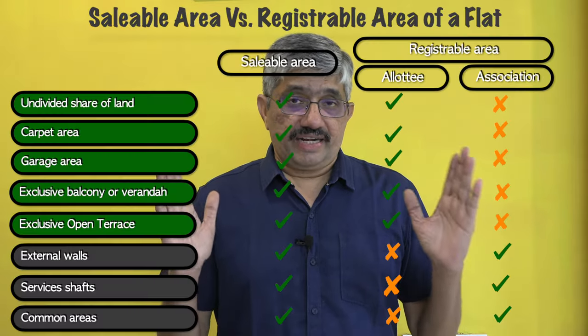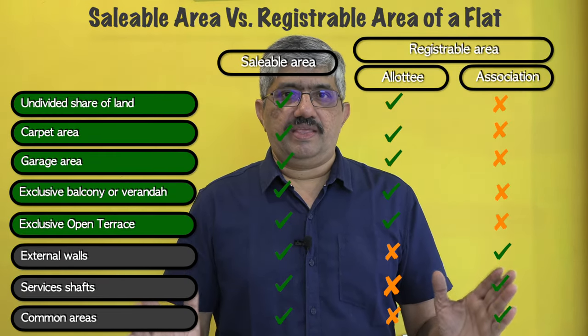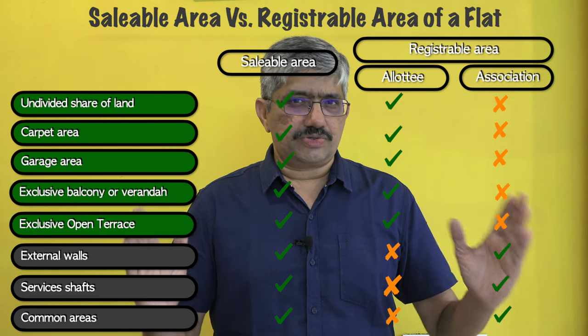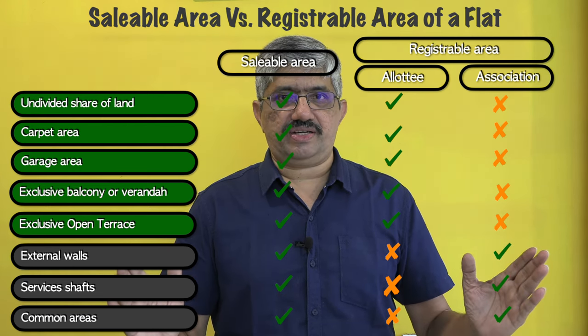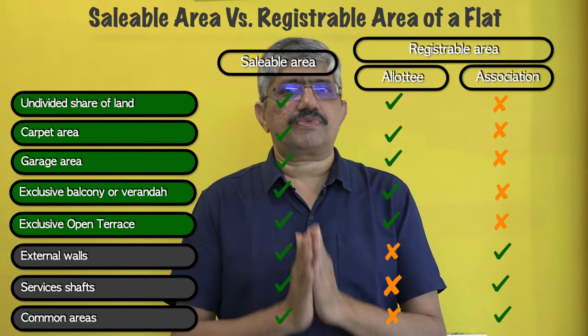What is registrable in the name of the LOT or buyer of a flat? RERA vaguely specifies — not without certainty — what is registrable in the name of the LOT and what has to be registered. The association of LOTs, undivided share of land, carpet area, exclusive balcony area, exclusive open terraces, exclusive verandas, and garages are to be registered in the name of the LOTs or buyers of a flat.